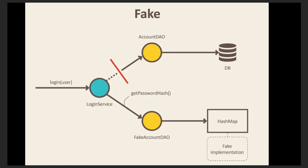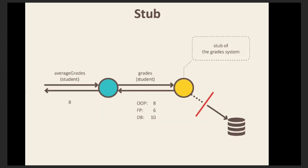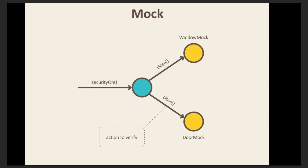There are several types of test doubles, but today we will consider only two main ones: stubs and mocks. Stubs help simulate incoming interactions. This refers to the calls made by the system under test to its dependencies in order to obtain input data. For example, retrieving data from a database is an incoming interaction — it doesn't result in a side effect. The corresponding test double is a stub.